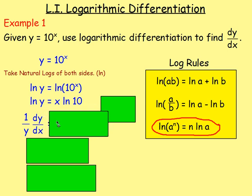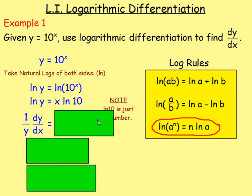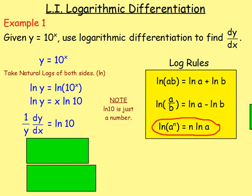Differentiating ln(y) gives 1/y · dy/dx. For x·ln(10): remember, ln(10) is just a number — treat it like 5x or 14.7x. The x disappears and leaves the number. Do not use the product rule here, because you do not have two functions in terms of x being multiplied together. So we get 1/y · dy/dx = ln(10).